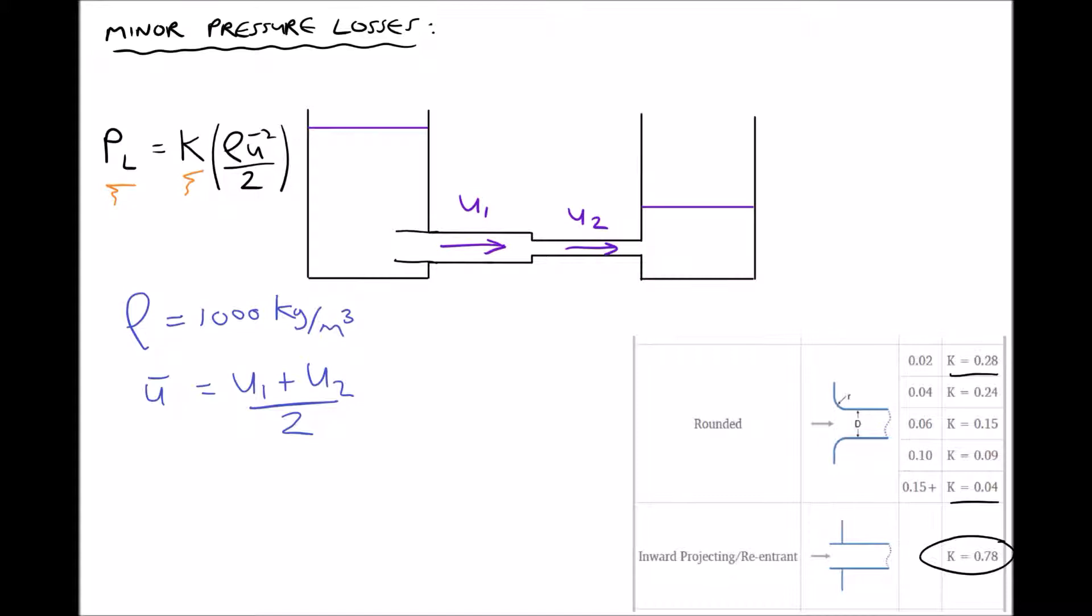So we have an inward projecting pipe and we have a fluid of density 1000 kg per meter cubed. What we need to determine is the velocity before and after that feature. Let's specify that our velocity in the first section of pipe u1 is 3 meters per second, and let's call the velocity of the fluid in the tank u0.